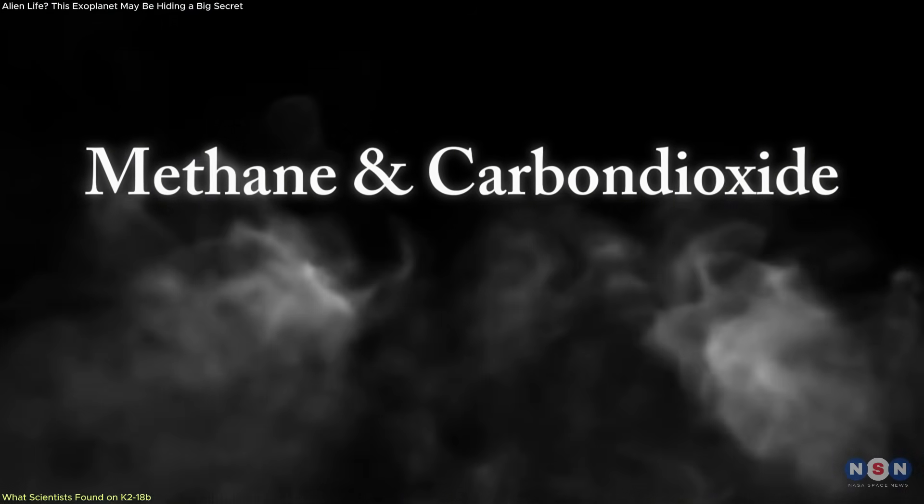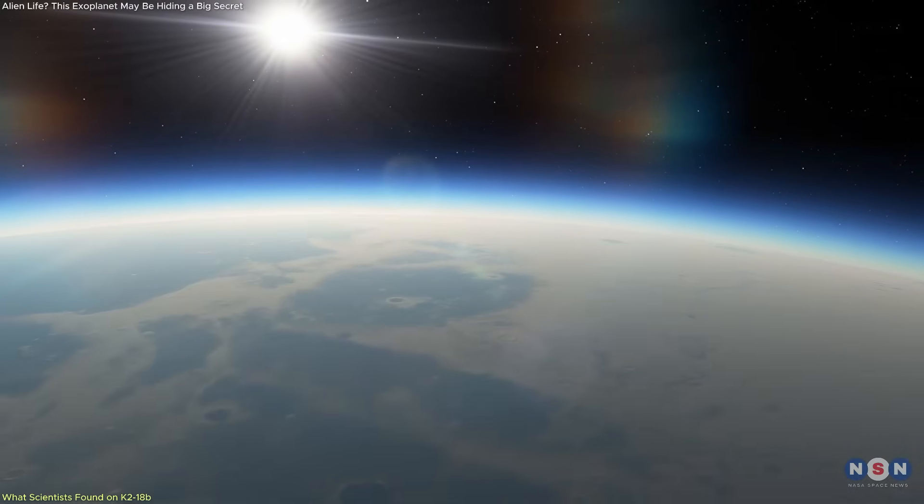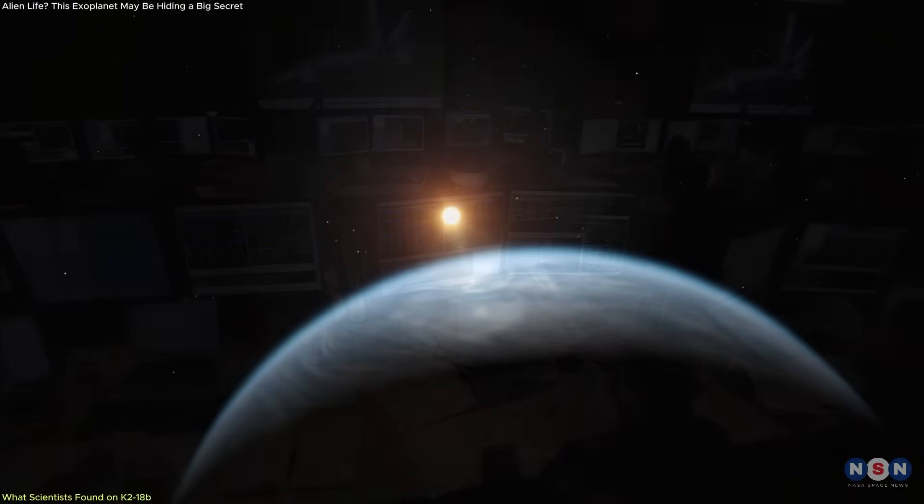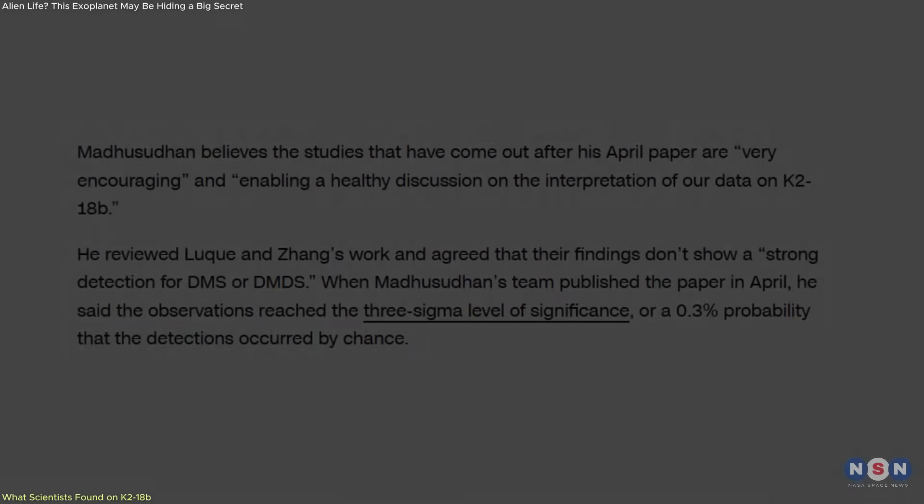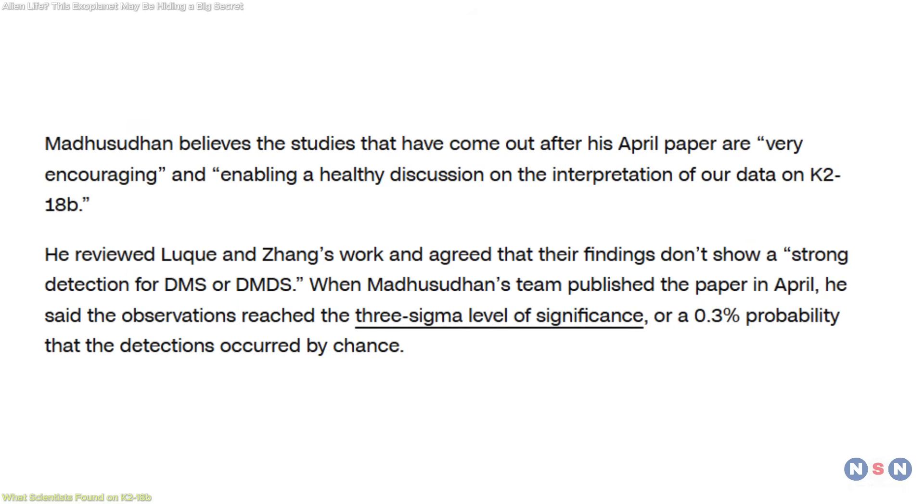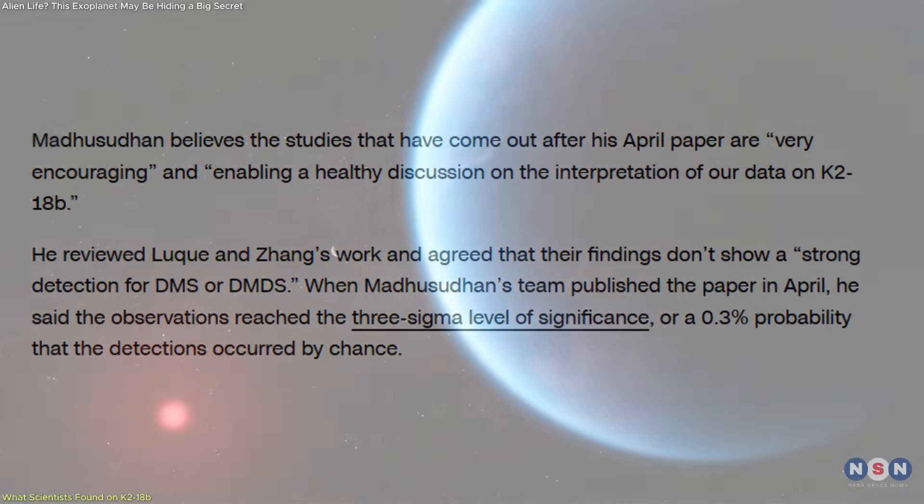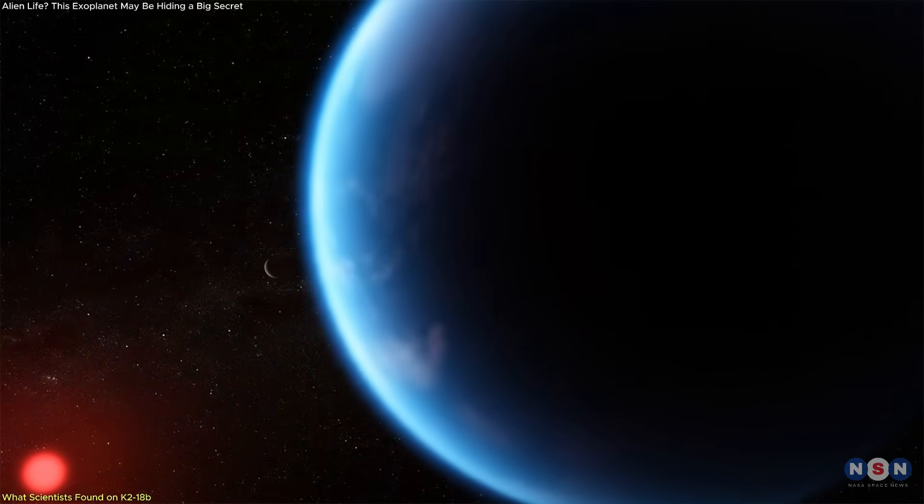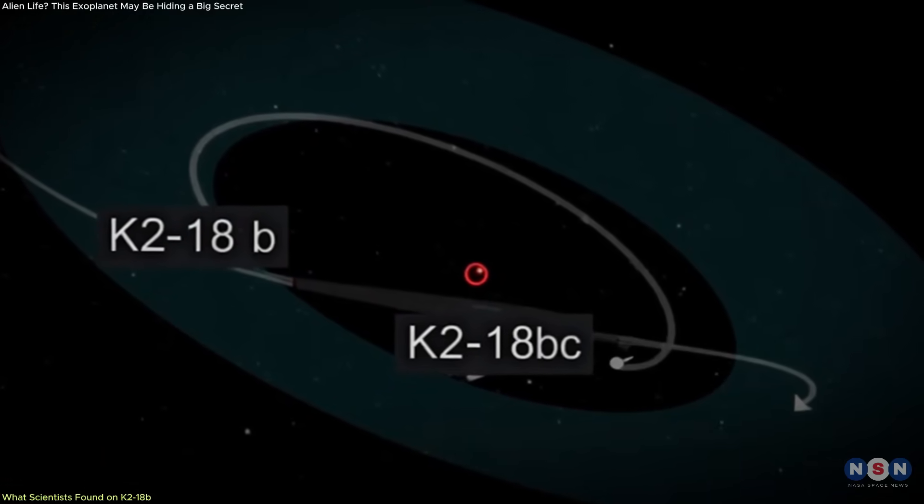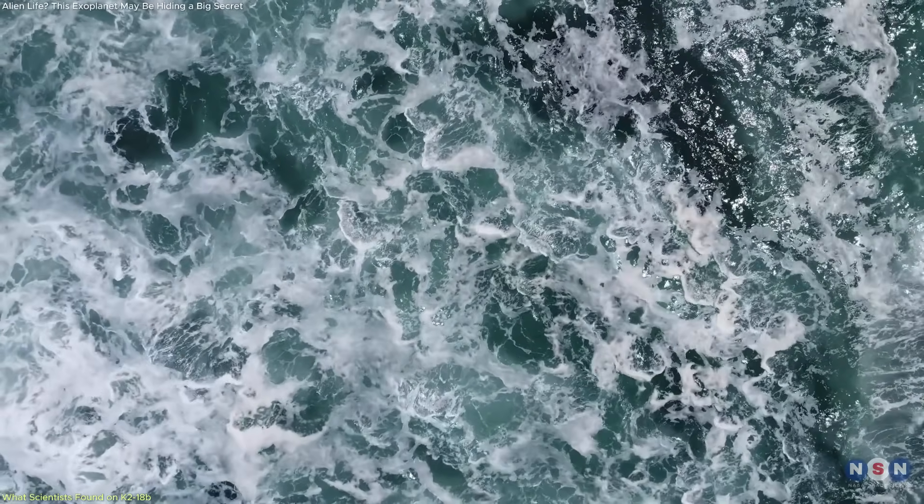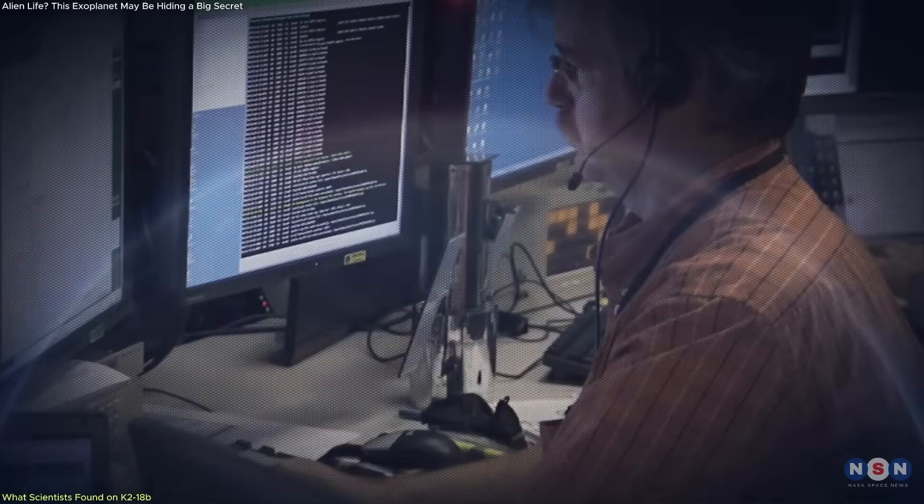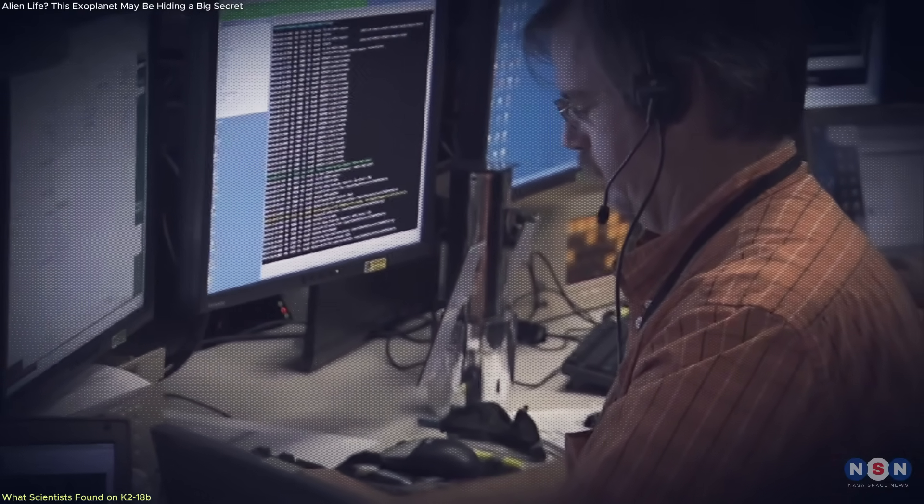Alongside methane and carbon dioxide, the chemical mix in the atmosphere appeared complex, and the researchers described it as suggestive of potential life-related processes. They reported a three-sigma significance, meaning there was a low probability that the detection happened by chance, but not enough to be called a discovery. K2-18b orbits in its star's habitable zone, where temperatures could allow for liquid water. Combined with its size and atmospheric composition, this made it a strong candidate for further biosignature analysis.